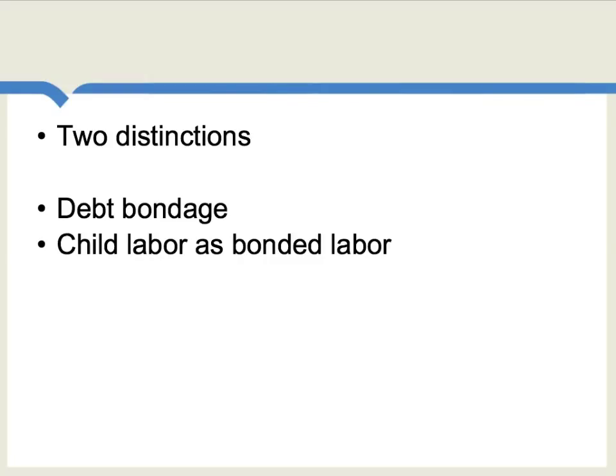There are two common subcategories within the idea of bonded labor. One of them is debt bondage, when an individual turns himself over to his or her employer because he or she cannot pay off a debt. The other is child labor as bonded labor. In that case, it may not be voluntary at all, but rather it's the parents selling the child and the labor of the child to an employer.